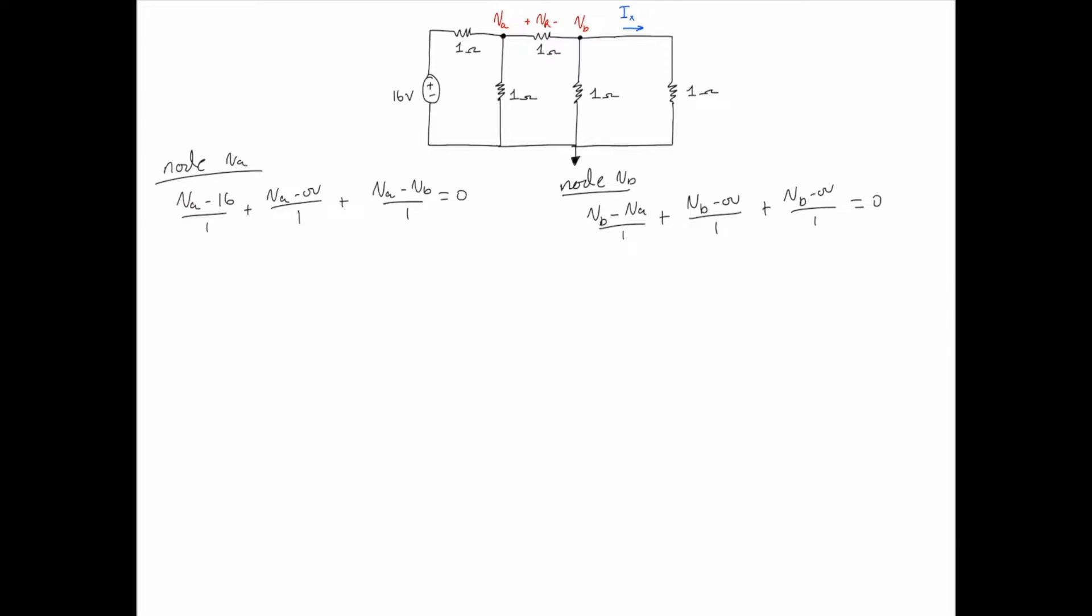Simplifying node VA we get equation 1: 3VA - VB = 16. Simplifying node VB we get equation 2: -VA + 3VB = 0.